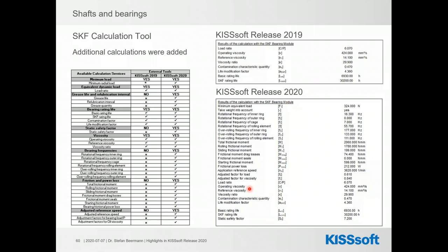Since a few years we have a very good cooperation with SKF, who give us access to their calculation server. In the new release this was dramatically extended — we now also have grease life calculation, static safety factor calculation, bearing frequencies, friction and power losses, and adjusted reference speed calculation performed by the SKF server, with results added to the report. Much more information is now generated via the SKF server.